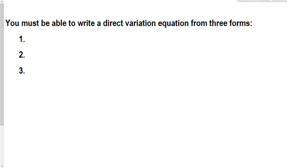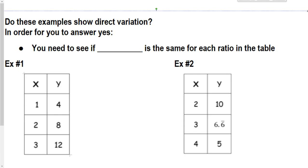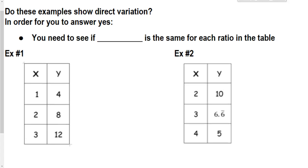So kind of just like what you wrote in the essential question, you must be able to write the direct variation equation. You must be able to see direct variation from a table, equation, and graph. And these notes are going to go over all three of these forms. The first one we're going to look at is the table. So the main question is, do these two examples show direct variation? Well, in order to answer yes, remember this is the table. So in order to answer yes here, you need to see is y over x, because remember that is our k value, that's constant proportionality. You need to see if y over x is the same for each ratio in the table.